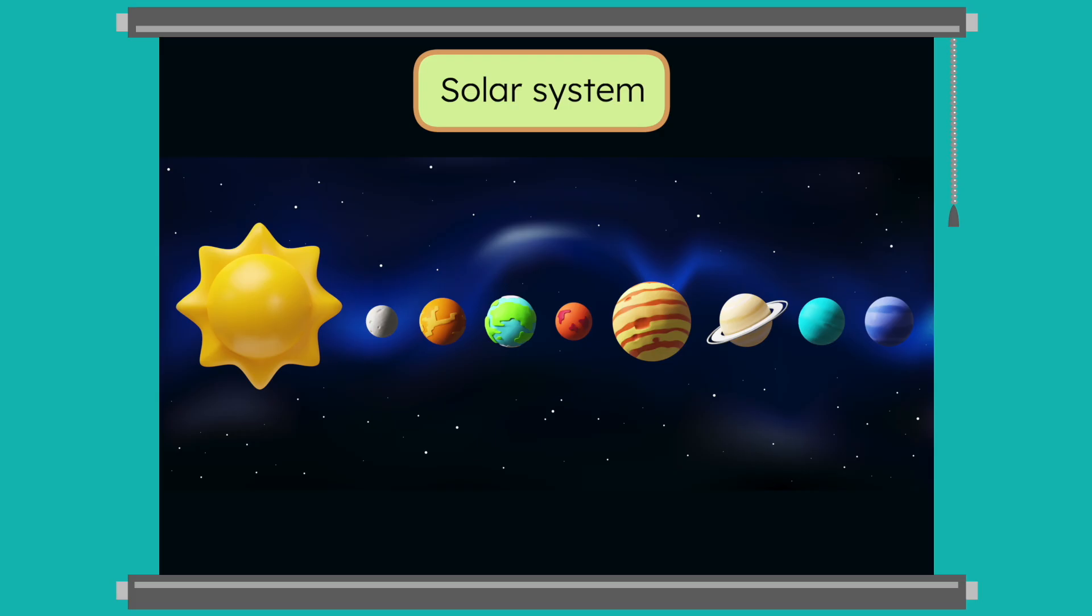Some planets are closer to the Sun, like this one. And others are much farther away, like this one over here. The planets closer to the Sun are much hotter than Earth. Why do you think that is?